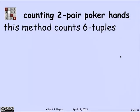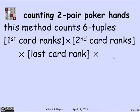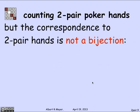What's the bug? The problem is that the number computed is exactly the count of six-tuples consisting of the first pair rank, second pair rank, last card rank, first pair suits, second pair suits, and last card suit. That is, it is counting the number of possible choices for each position in the six-tuple correctly. But counting these six-tuples is not the same as counting the number of two pair hands, because the mapping from six-tuples to two pair hands is not a bijection.